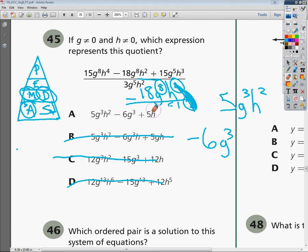So my only answer that I'm left with is a, but in the interest of completion, one of my co-workers has real serious OCD, so I'm going to finish the problem just for him. So I'm going to do 15g to the fifth, h to the third, over 3g to the fifth, h to the second.